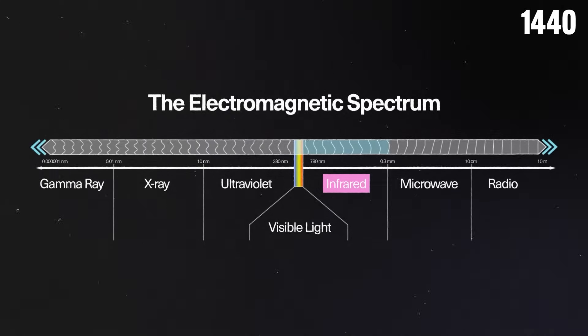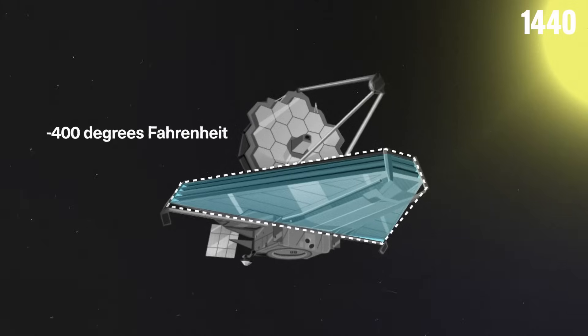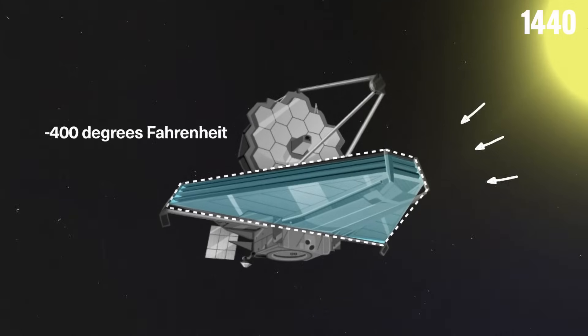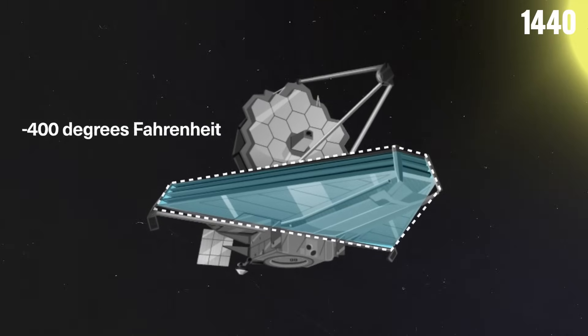To maintain sensitivity to these infrared wavelengths, the Webb must stay extremely cold, close to negative 400 degrees Fahrenheit. A tennis court-sized sunshield keeps its instruments in permanent shadow, ensuring they remain cool.